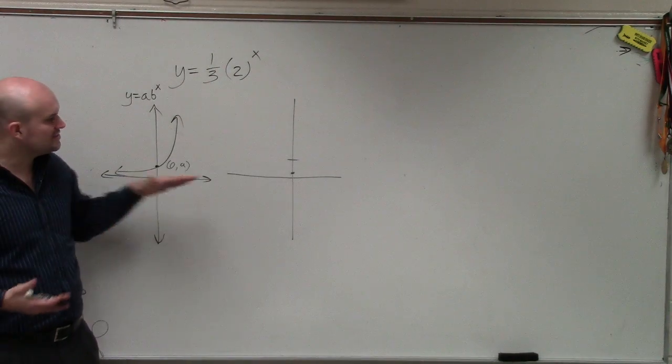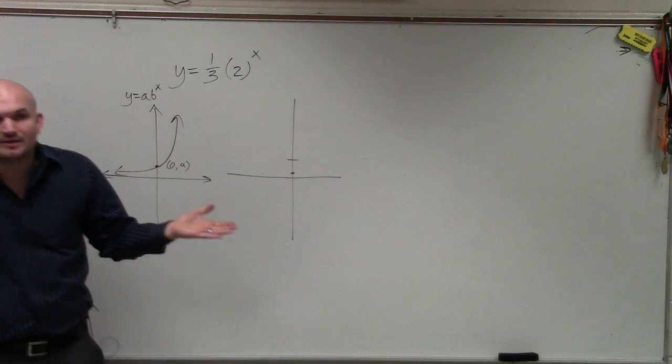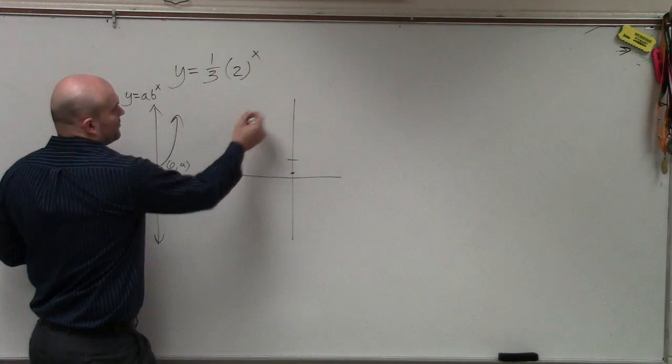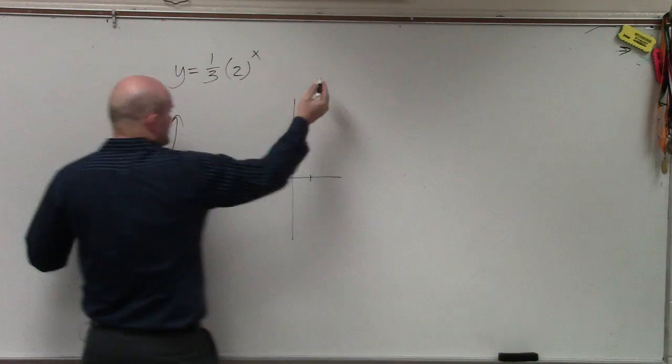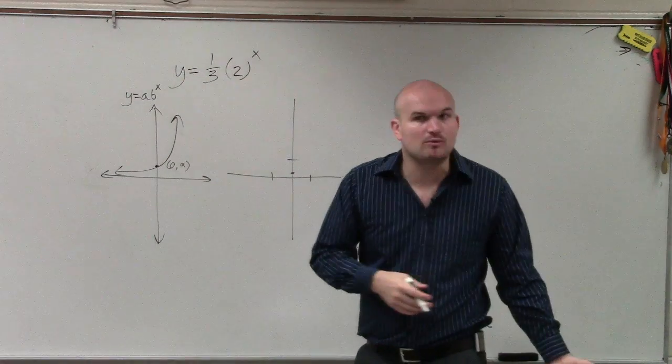All I was really asking you guys to do is know the shape and then to also just pick a value. So the best thing to do is pick a value to the right and to the left of the y-intercept. So the easiest values I would pick would just be 1 and negative 1.